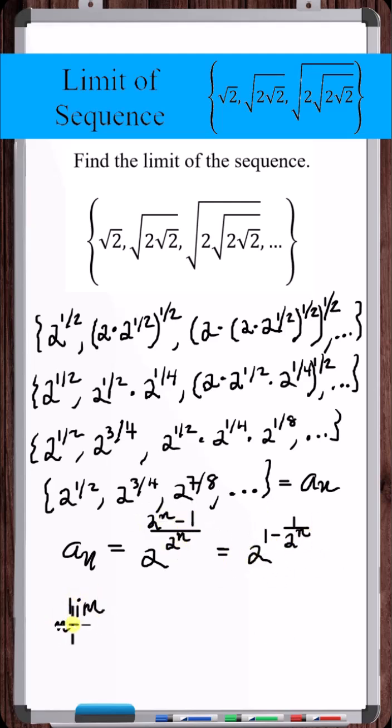Now we just need to take the limit as n goes to infinity of this a sub n, and that's the limit of the sequence. So as n goes to infinity, this term goes to zero. So this entire exponent goes to one. Two to the one power is two. The limit of the sequence, a sub n, is equal to two.